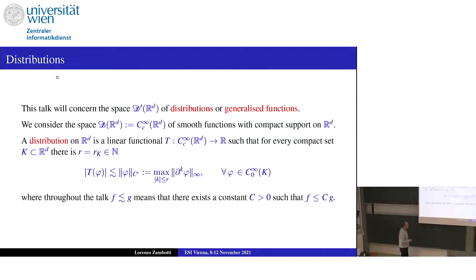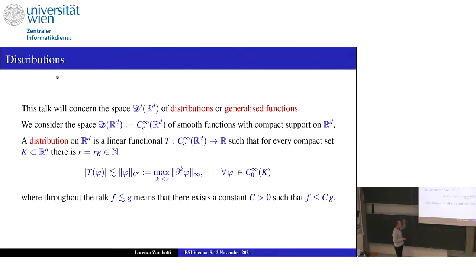The norm is the supremum norm of the first k derivatives of the function phi, for every phi supported in K and C-infinity. Throughout this course, the symbol ≲ means there is some universal constant such that the bound holds. Every locally integrable, in particular continuous, function defines a distribution by integration.